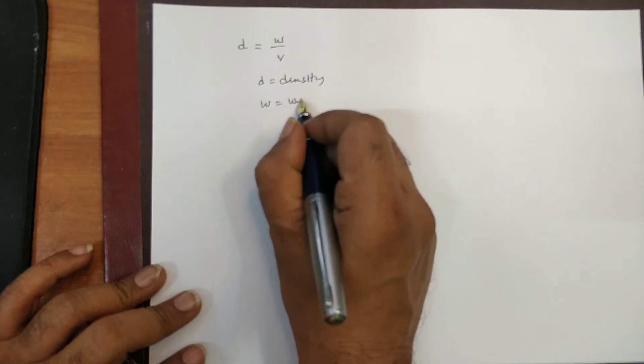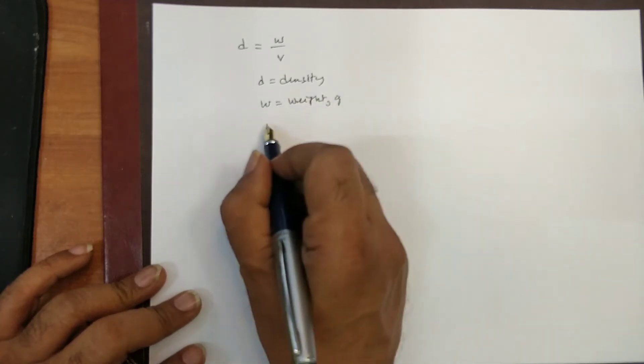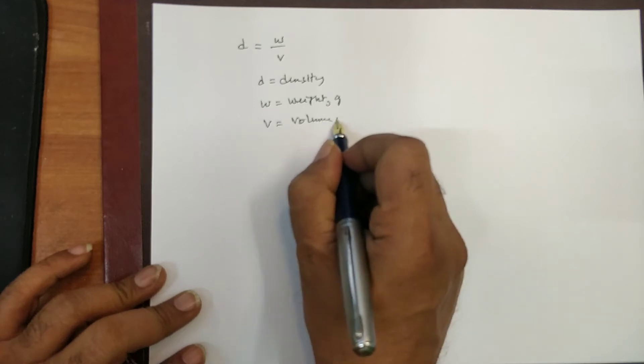that is the weight. Weight, we can call it in gram. And similarly, volume, volume of the coating. Volume of the coating. So how can you get this volume of the coating?